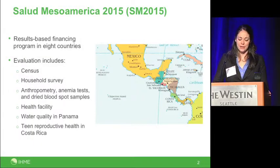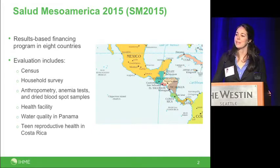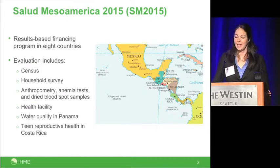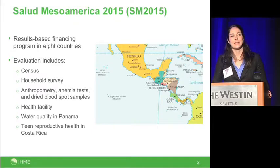The Mesoamerican Health Initiative, or SM2015, is a results-based financing program managed by the Inter-American Development Bank. The program provides financial incentives to eight ministries of health in Central America to improve child and maternal health outcomes for the poorest populations. IHME is collecting a variety of baseline data in areas where these interventions will be rolled out. The results I'm presenting today come from the state of Chiapas in Mexico.